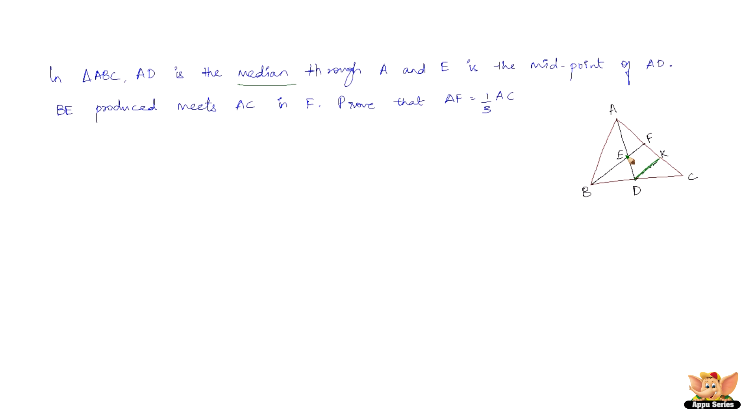In triangle ADK, E is the midpoint of AD and EF is parallel to DK. Therefore, F is the midpoint of AK. This again follows from the converse of the midpoint theorem.